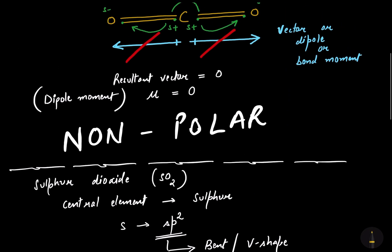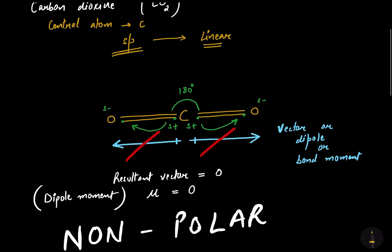In the case of carbon dioxide, we had linear geometry and two vectors in opposite directions, which cancelled each other, so the resultant vector was zero and the dipole moment was zero — making it a non-polar molecule. The dipole moment is the property that measures the extent of polarity, but it is a directional property — it depends upon the directions of the vectors, or we can say the dipoles, or the directions of the polar bonds in a molecule.